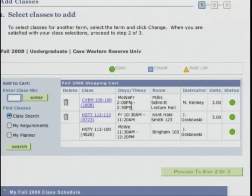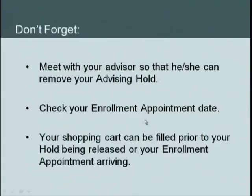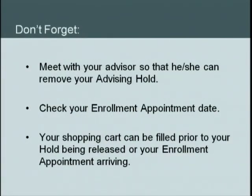Before you go ahead and register, there are a few things you need to take care of. First, you have to meet with your advisor so that he or she can remove your advising hold. Students get an advising hold so that you talk to your advisor before selecting classes. You also need to check your enrollment appointment time — all students have enrollment appointment dates, which is the date they can start enrolling. You can only start enrolling as of that date, so if it hasn't arrived the system will tell you no. Your shopping cart can be filled prior to your hold being released and prior to your enrollment appointment, so you can take care of all that work ahead of time.